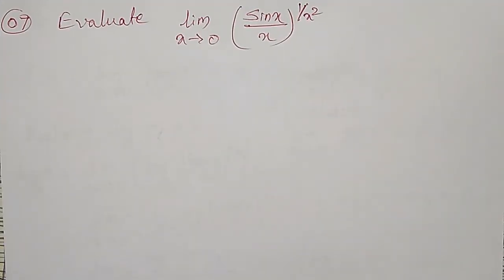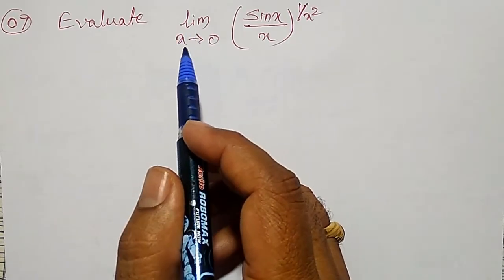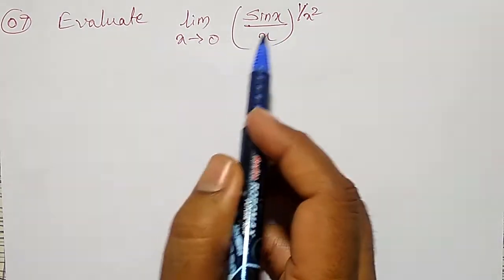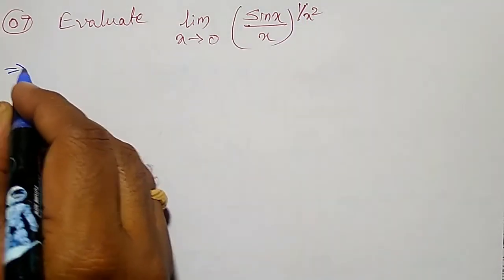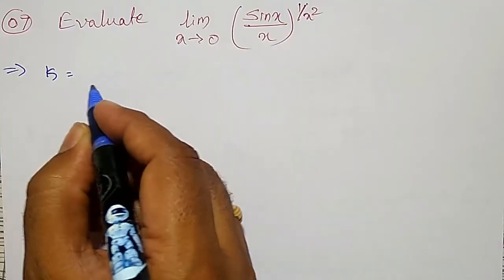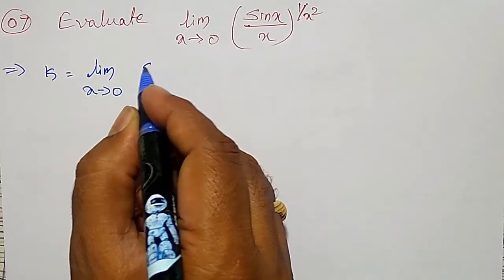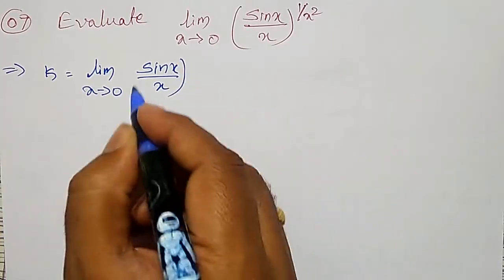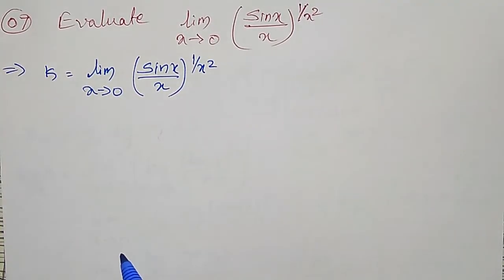Welcome friends. In this video I'm going to evaluate the limit as x tends to zero of (sin x / x) raised to 1 by x square. Let me call this limit value equal to k, so k is equal to limit as x tends to zero of sin x divided by x, raised to 1 by x square.